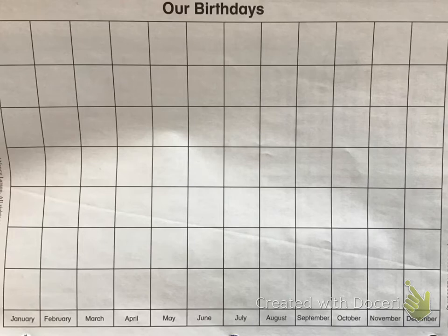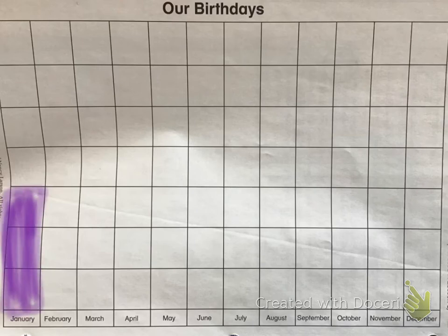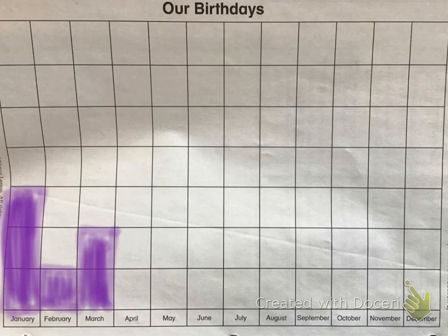Let's just say that there are three people born in January. So I would fill in three boxes for January. Let's say that only one person is born in February, so I'd fill in one box for February. Maybe two people are born in March, so I'd fill in one, two boxes.